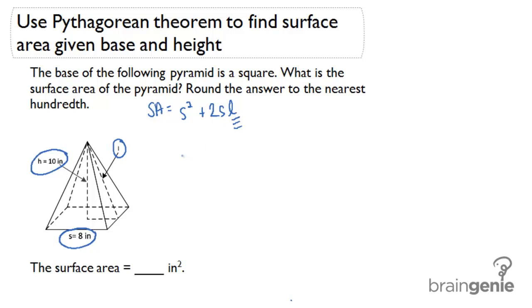So we need to first figure out how we can get the slant height, and then we remember we have Pythagorean theorem. The Pythagorean theorem tells us that there is this relationship between the height of the pyramid and the slant height that comes from this right triangle formed inside the pyramid.